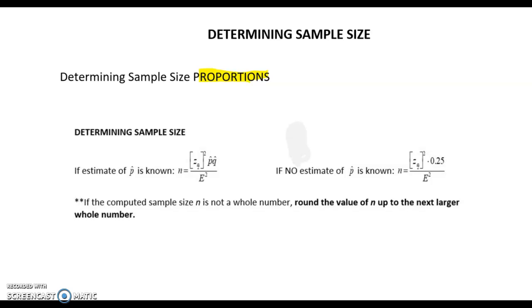If P, the estimate of P hat is known, so if we have a point estimate for the proportion, then we'll use the formula that says N equals critical value squared times P hat Q hat over E squared.